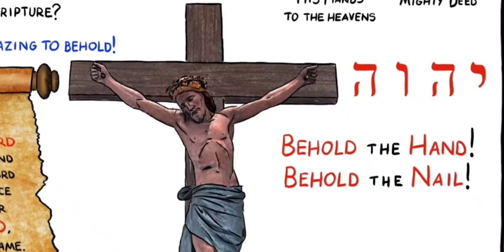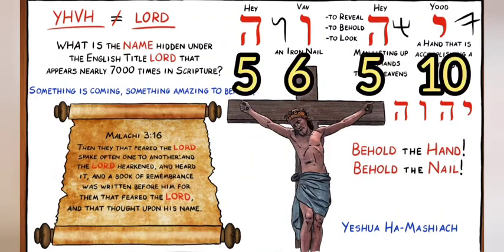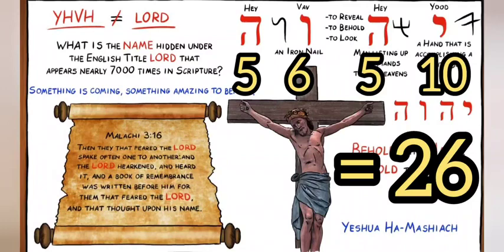A lot of times people will say, why does God equal 26, or why does the name of God equal 26? Well, it's because it's in these Hebrew letters, Yod-Heh-Vav-Heh, and that equals 10-5-6-5. This screenshot was from C.J. Lovick's video — I can link that.